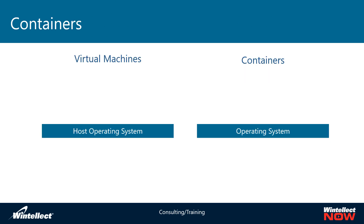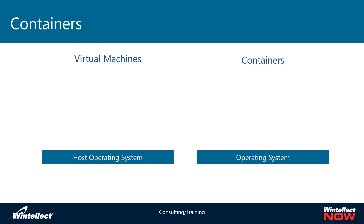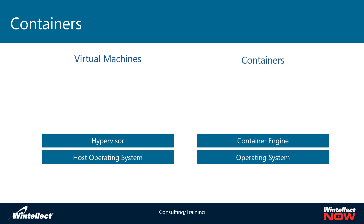Containers and virtual machines are similar in that they both have a base operating system. For virtual machines, that's a host OS running a hypervisor — something like VirtualBox, Hyper-V, or VMware. For containers, the equivalent is a container engine, which is most likely Docker. You can also add orchestration tools on top of Docker like Kubernetes. Fundamentally, the container engine is responsible for what the hypervisor does in virtual machines.